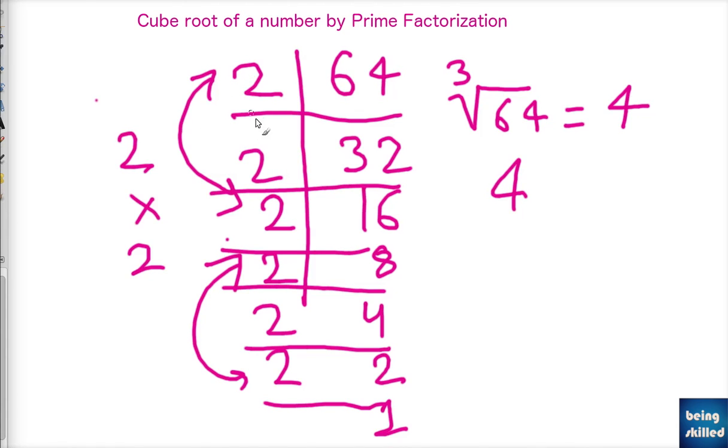So since we have two groups of 2s, so it is 4. So this is how we calculate cube roots of any number using the prime factorization method.